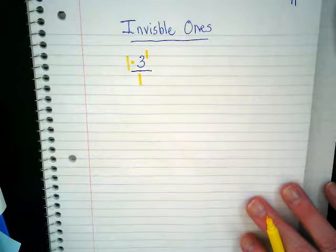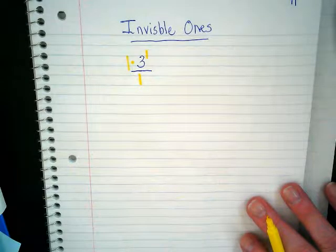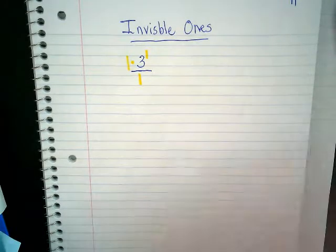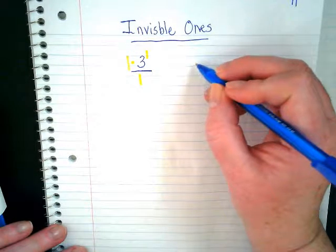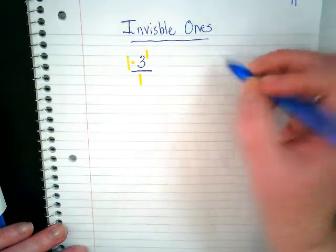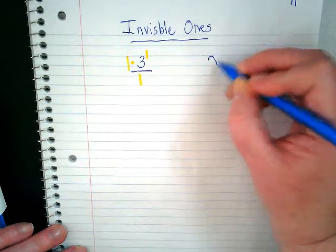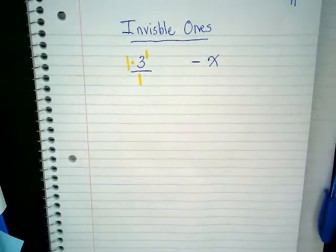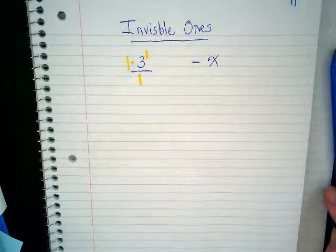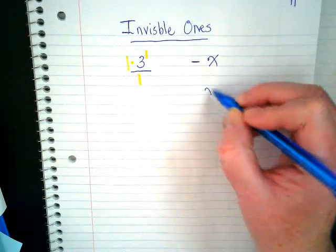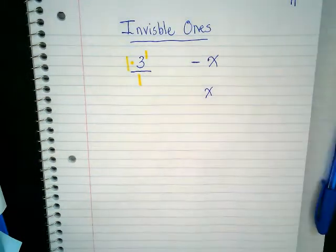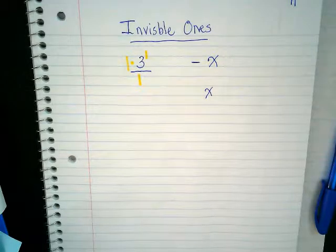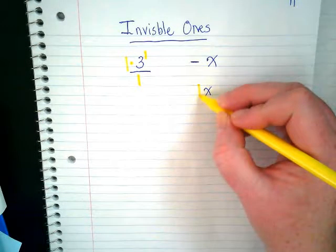This really becomes important as we start dealing with negatives, because sometimes there's invisible negative ones. If I have a negative x, it's not by itself. If I have an x, it means I have one x and there's an invisible one in front of it.